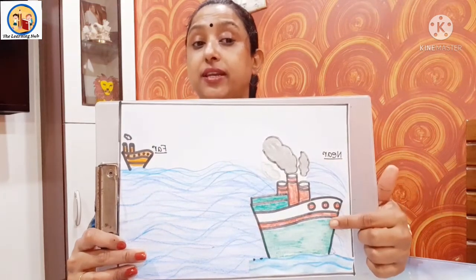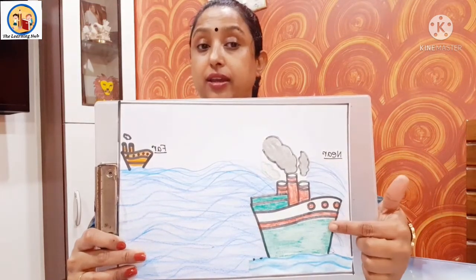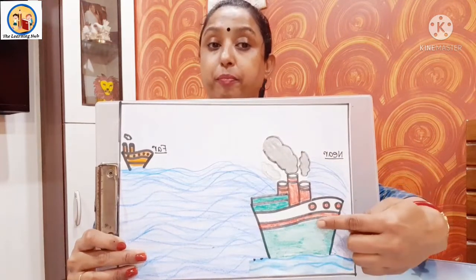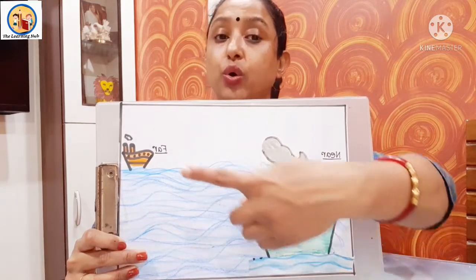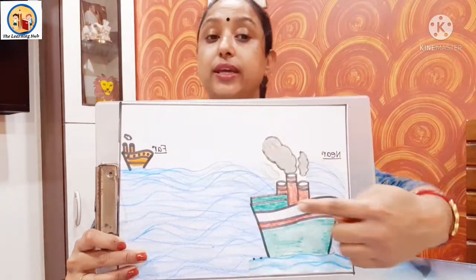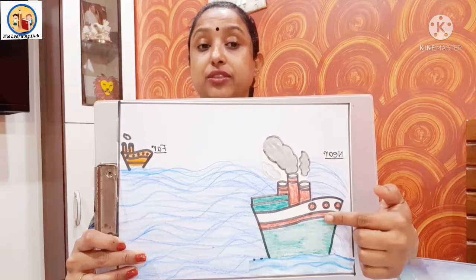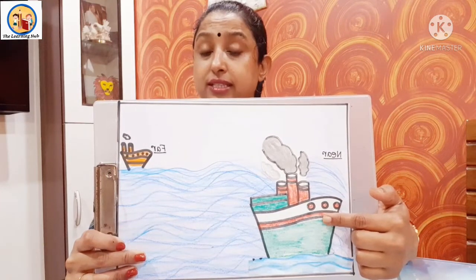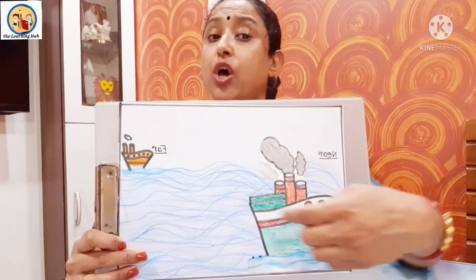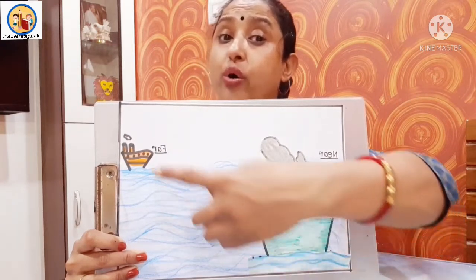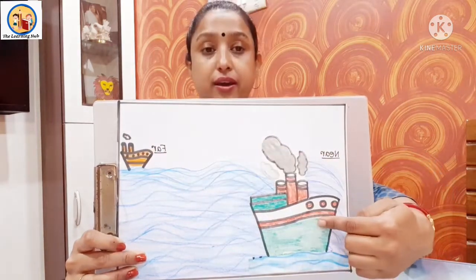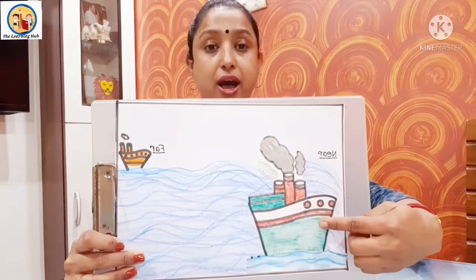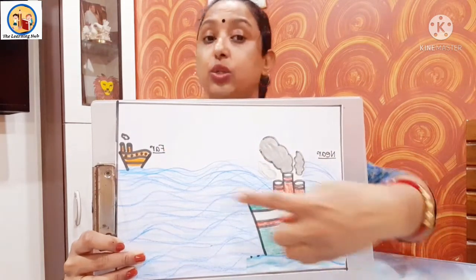So this ship is near and that one is far. Near, far — paas, door. Near means this ship is at short distance, and that ship is at long distance. So near, far — paas, door.